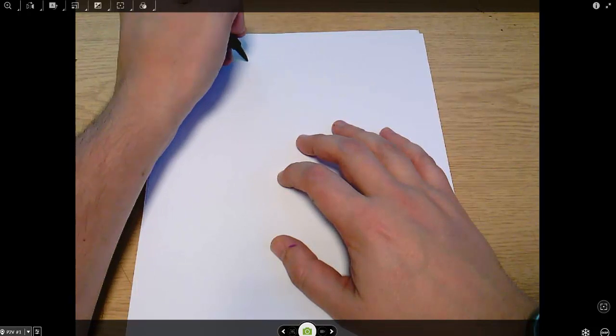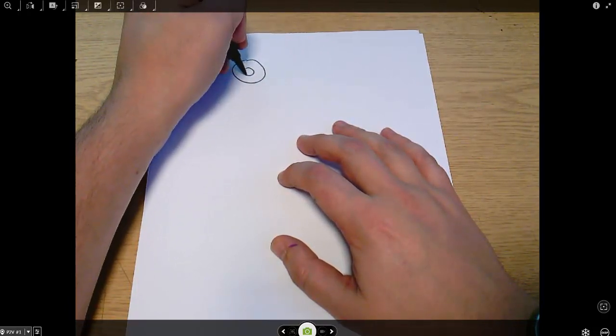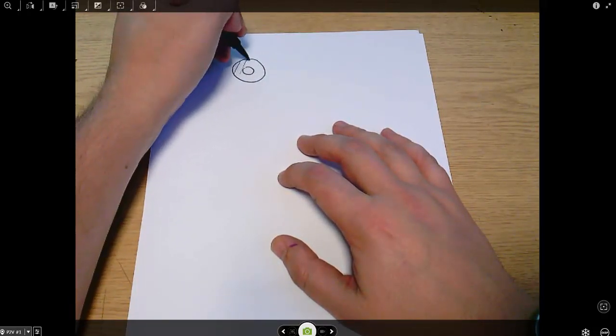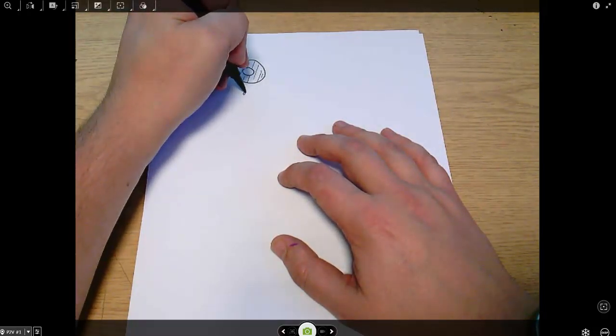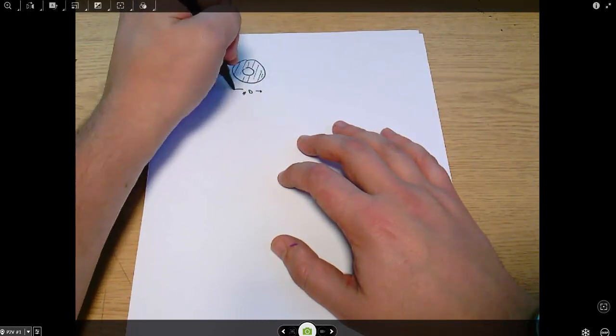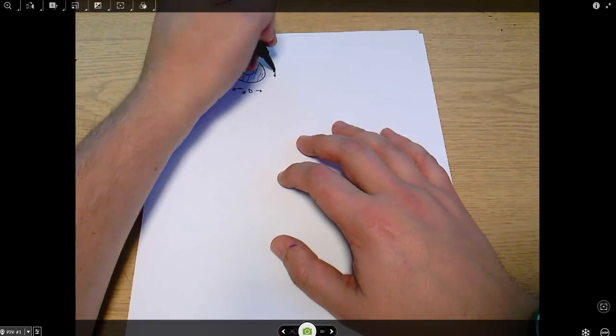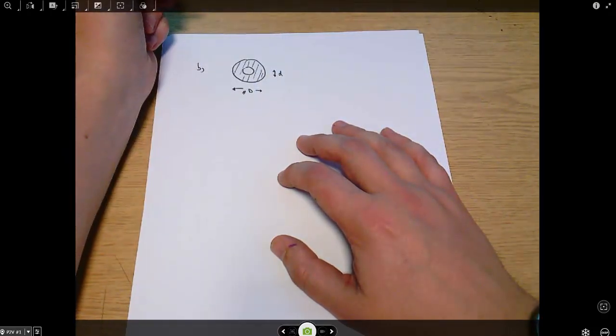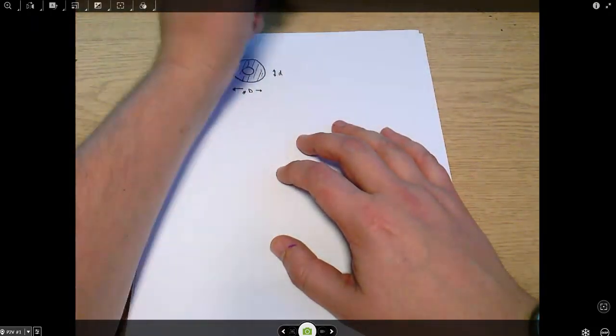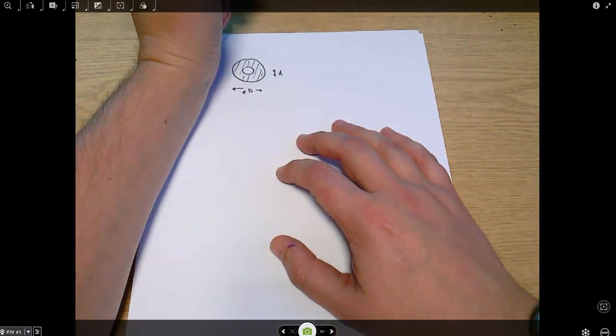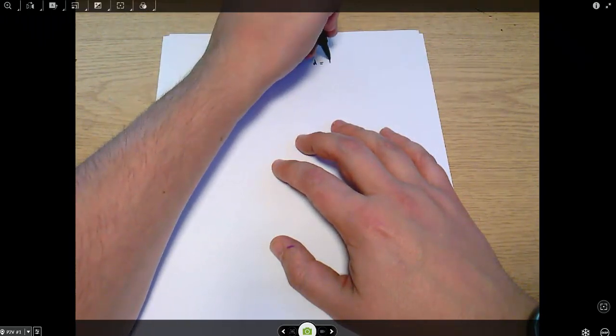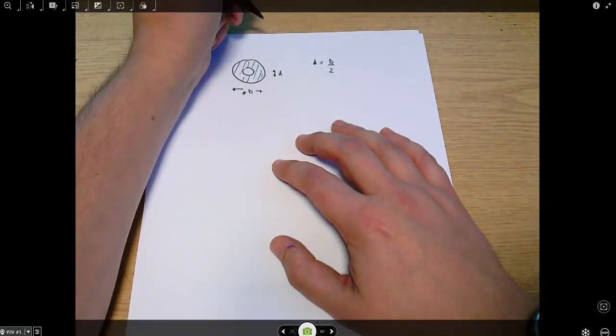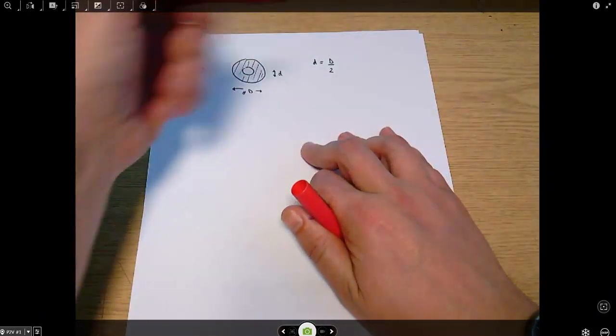In part B we're asked the same thing but this time we've got a hollow shaft which looks like this. It's got an outer radius which I'll call capital D and an inner diameter which I'll call small d. We're told in the question that the inside diameter is one half the outside diameter, so small d equals capital D over 2. Now I'm just going to jump straight in. We're doing similar calculations to before.